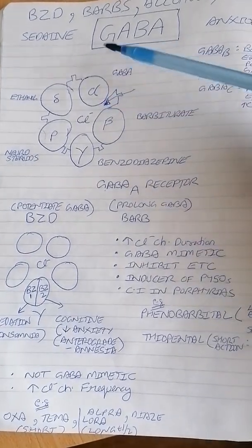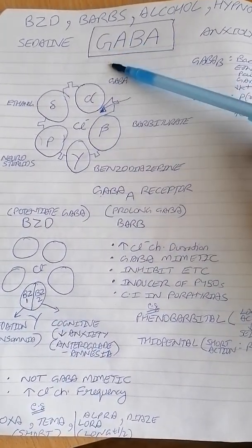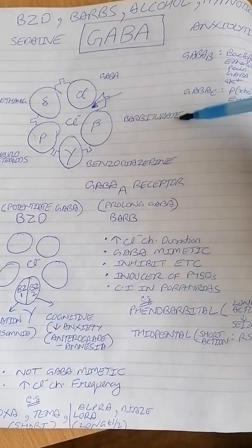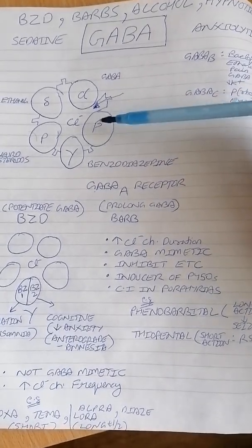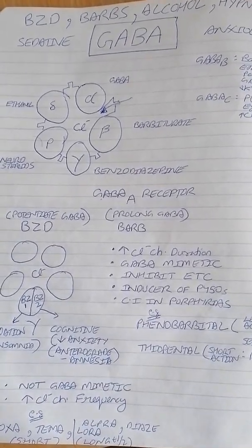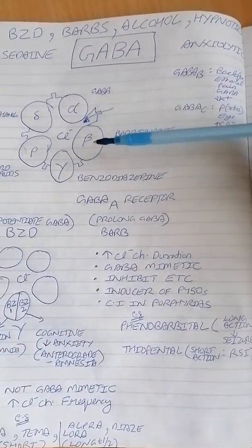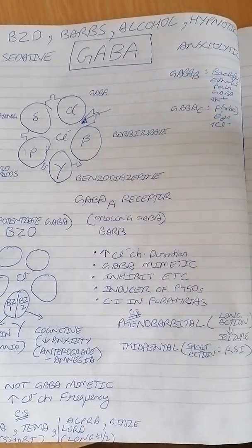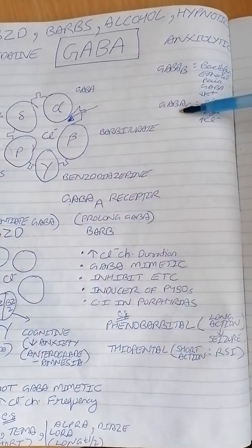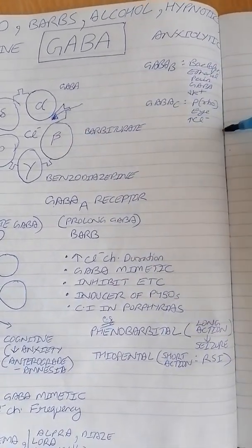Similarly, the beta subunit of the GABA-A receptor is where barbiturates attach, and benzodiazepines attach to the gamma subunit of the GABA-A receptor. GABA-A is of the greatest clinical significance, though GABA-B and GABA-C are also clinically important.